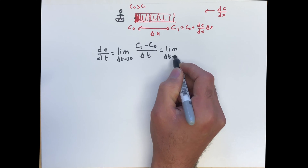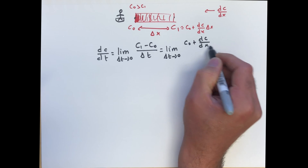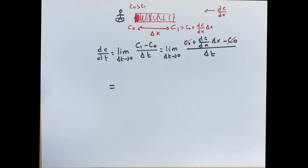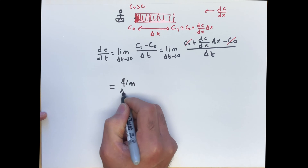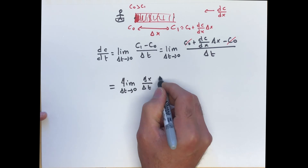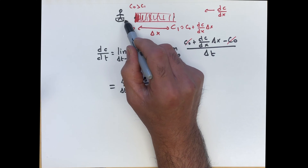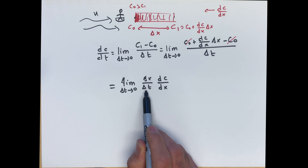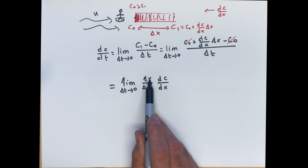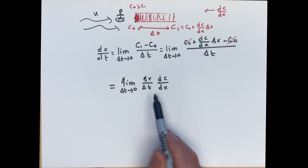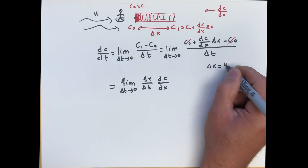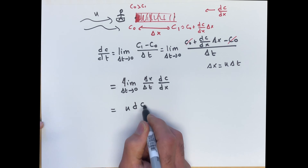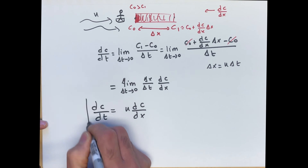Substituting in, we get the limit as delta T approaches 0 of (C0 + (dc/dx)·delta X − C0) over delta T. The C0 terms cancel, leaving delta X over delta T times dc/dx. Since the person on the boat is traveling at the same speed as the fluid flow, delta X over delta T equals the velocity U. So we get dc/dt equals U·dc/dx.